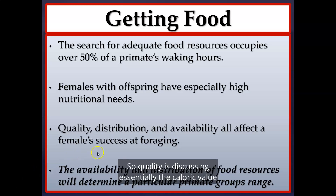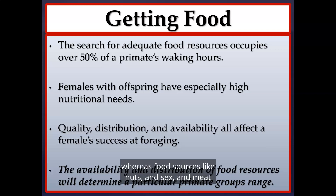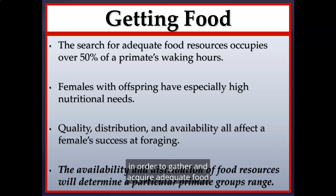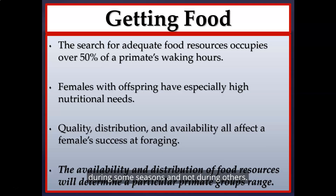Quality refers to the caloric value of food. Food sources like vegetation and fruit tend to be lower in calories, whereas food sources like nuts, insects, and meat tend to be higher. Distribution refers to how food is scattered across the landscape — a primate may need to travel farther to gather adequate food for the entire group. Availability refers to seasonality, especially with fruits and vegetation; some fruits are available during certain seasons and not others, requiring the group to switch food resources.